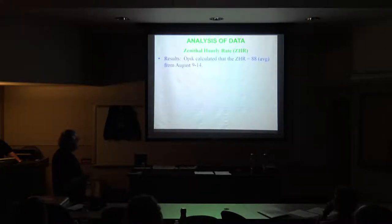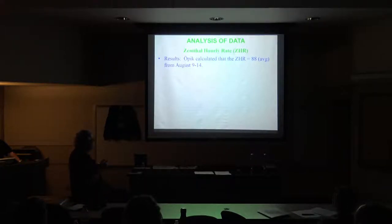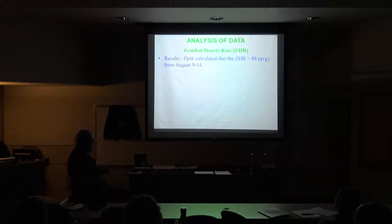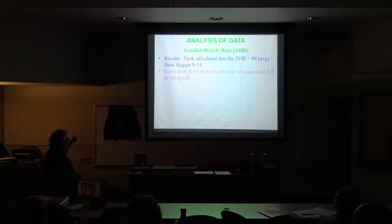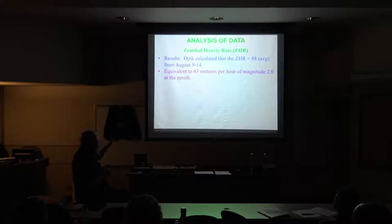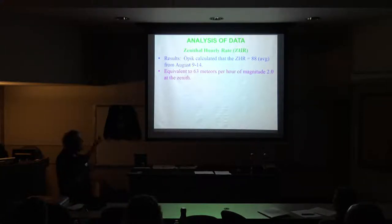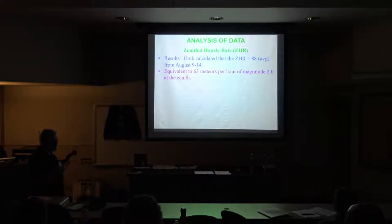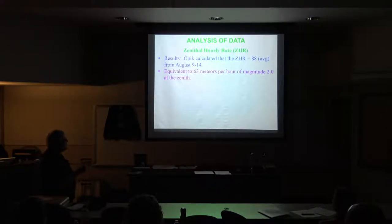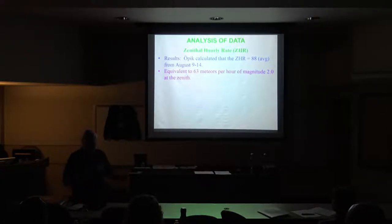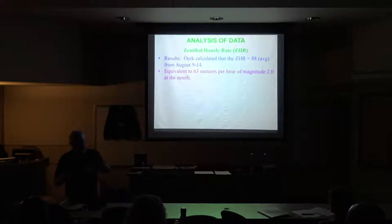Öpik did this for the Perseid meteor shower and found over a five or six night period the zenith hourly rate was 88 per hour. His calculation — which I understand and agree with — is that there would be about 63 meteors per hour of magnitude 2 at the zenith. He converted all of them to second magnitude from whatever magnitude they actually were, because he was trying to find out how many particles were there so he just made them all the same size.